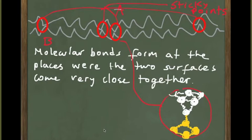The force of friction, as we are going to see in an equation, is dependent on the normal force between the two objects. This is due to the fact that if you press the two surfaces together with a greater force, the number of points where the two surfaces come into close contact increases, therefore increasing the frictional force between the two surfaces.